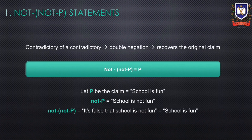A not-not-P statement is the contradictory of a contradictory, which results in a double negation. A double negation recovers the original claim P. For example, let P be the claim that school is fun. Not-P will be: school is not fun. Therefore, not-not-P is: it's false that school is not fun, which means school is fun.